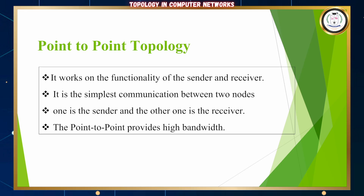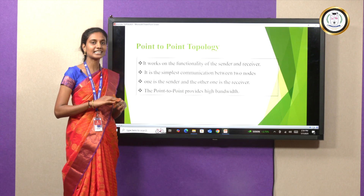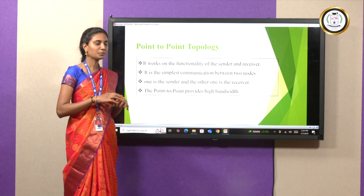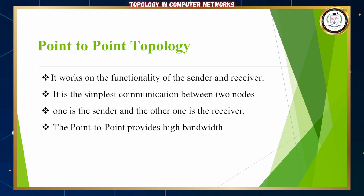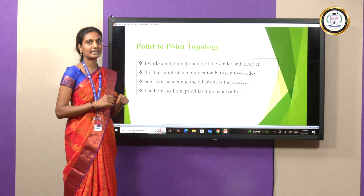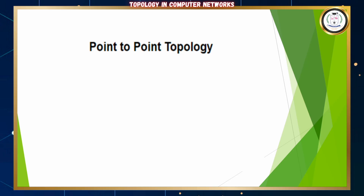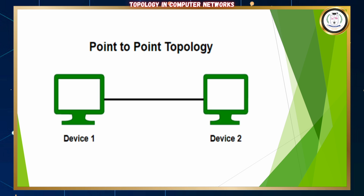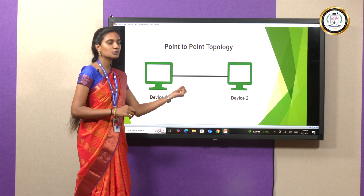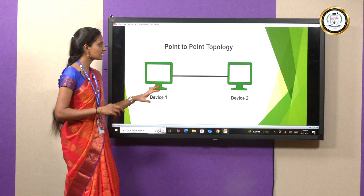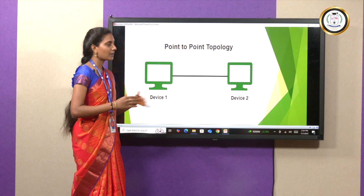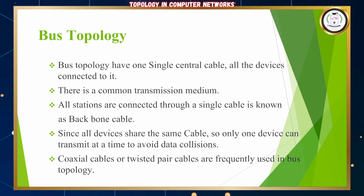First one: point-to-point topology. In point-to-point topology, it works on the functionalities of sender and receiver. The communications are very simple. There are only two devices — one is sender and another one is receiver. The point-to-point topology provides high bandwidth. In the diagram, there is one sender and one receiver with no central hub or switch. This is the simplest communication compared with other topologies.